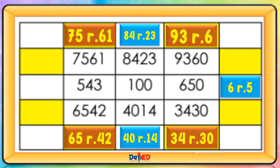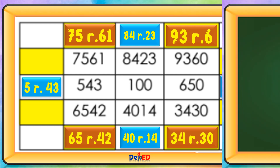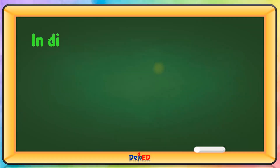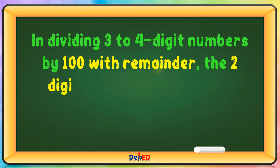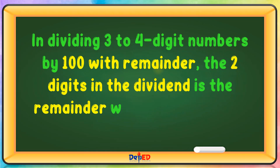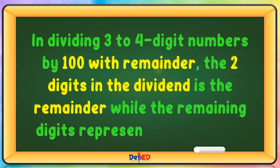And 5,430 divided by 100 is 5, remainder 43. In dividing 3 to 4-digit numbers by 100 with remainder, the last 2 digits in the dividend is the remainder while the remaining digits represent the quotient.